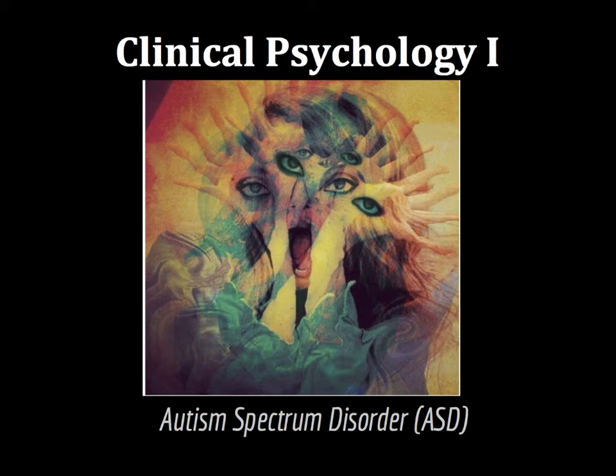In 1943, Austrian-American psychiatrist Leo Kanner was the first to use autism in the modern sense when he introduced the label 'early infantile autism' to describe a group of 11 children with similar symptoms, all treated at Johns Hopkins Hospital. And so we come to today's lesson on ASD.